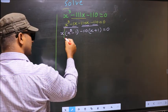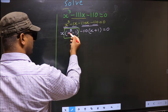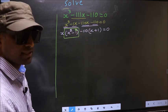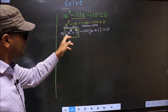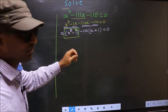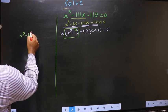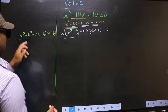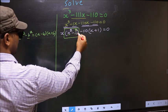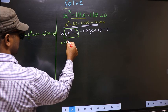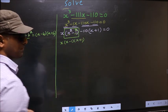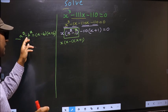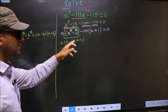Now observe this bracket — there is a negative symbol, you have x² and here 1. On 1, if I put the square it does not make any difference. The reason is now we can apply the formula a² - b² = (a - b)(a + b). In place of a you have x, in place of b you have 1. So this becomes (x - 1)(x + 1).